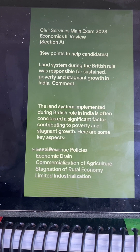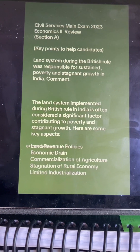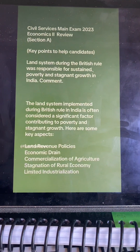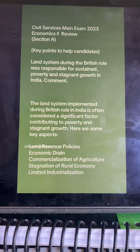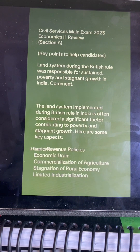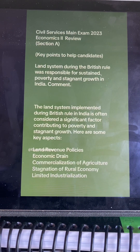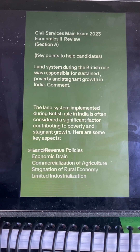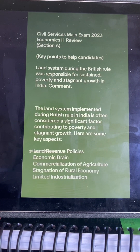Thank you for joining me today. We are going to review the Civil Services Main Exam 2023 Economics 2 paper, starting with section A, question number one: 'Land revenue system during the British rule was responsible for sustained poverty and stagnant growth in India — comment.'